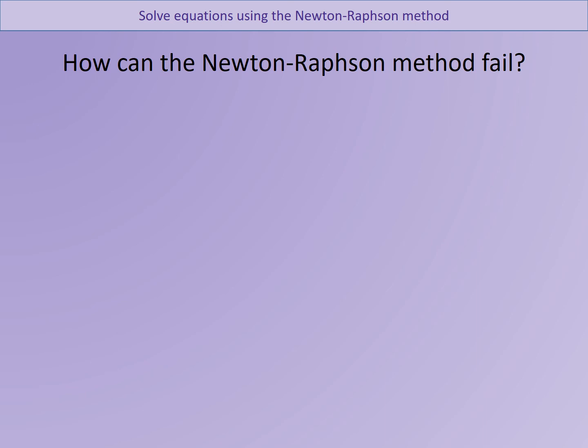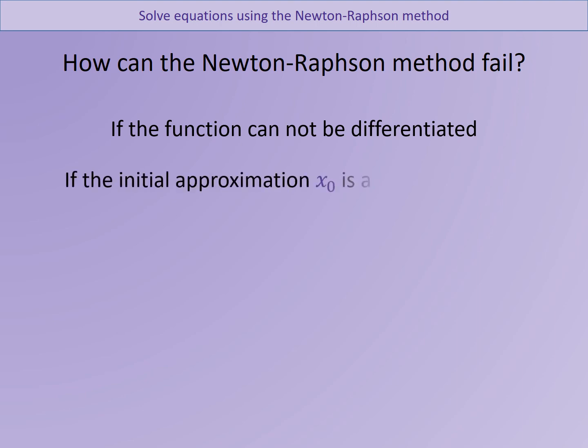First problem we might have is if you get something that can't be differentiated. If your function can't be differentiated, then you can't use the Newton-Raphson method, because you won't be able to form that denominator. So that will cause a problem and therefore you'd have to pick a different method. The other situation that causes a problem is because you're substituting your value in and finding the gradient, if the gradient comes out to be a stationary point, then what happens is your line just goes horizontal to the x-axis. So therefore, it never crosses the x-axis, so therefore you can't find your next solution. So if it can't be differentiated, or if your first value is a stationary point, then therefore your Newton-Raphson method would fail.